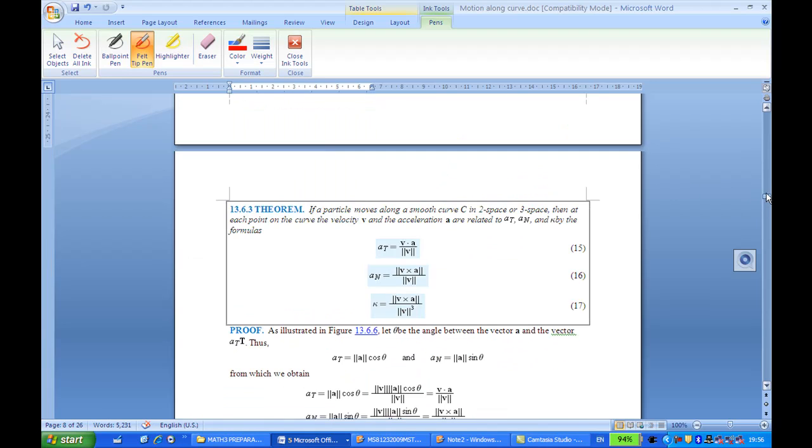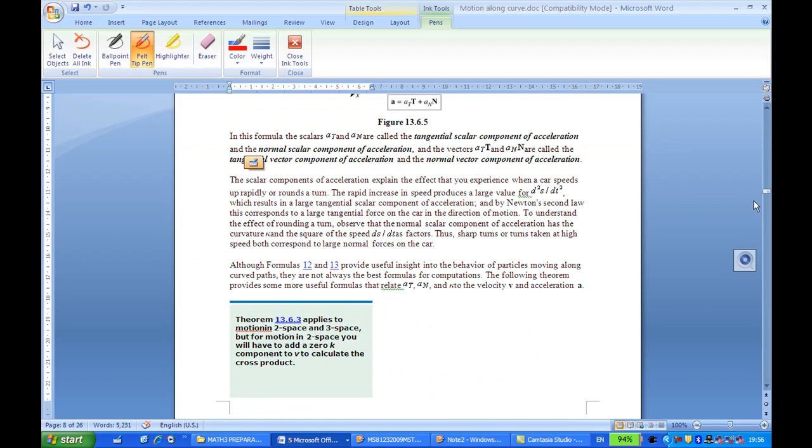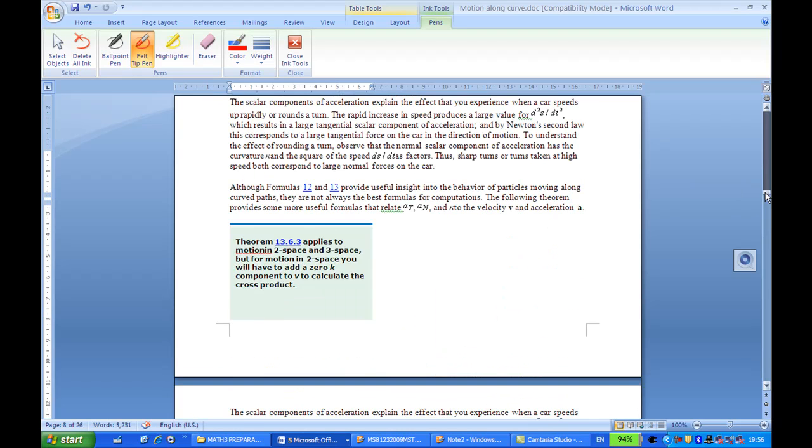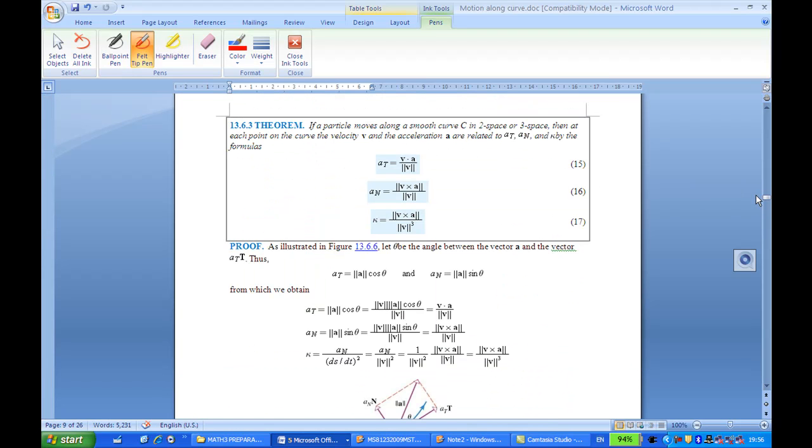In our Anton, it says that At is equal to v dot a over length of v. An is equal to the length of v cross a over the length of v.